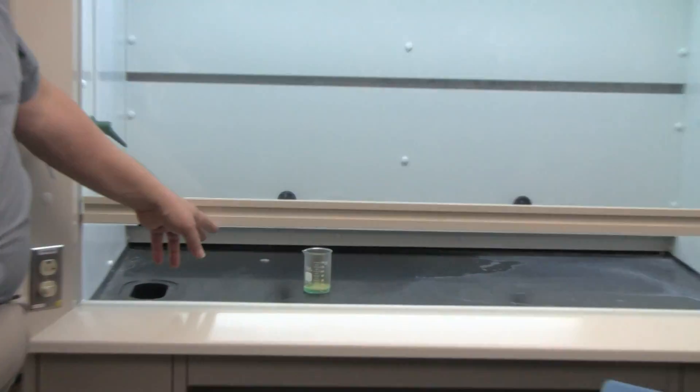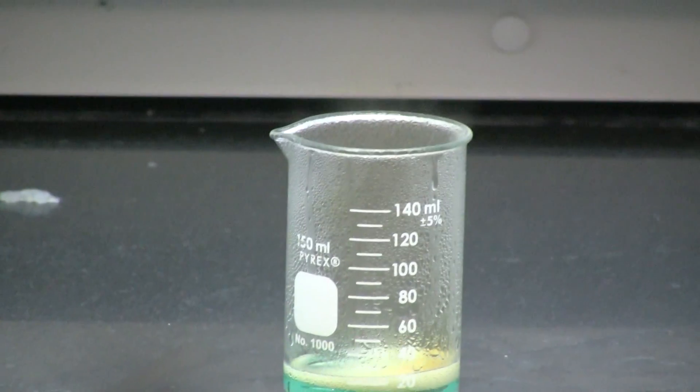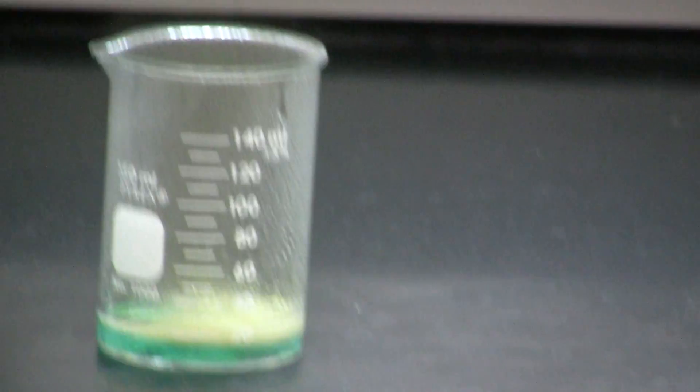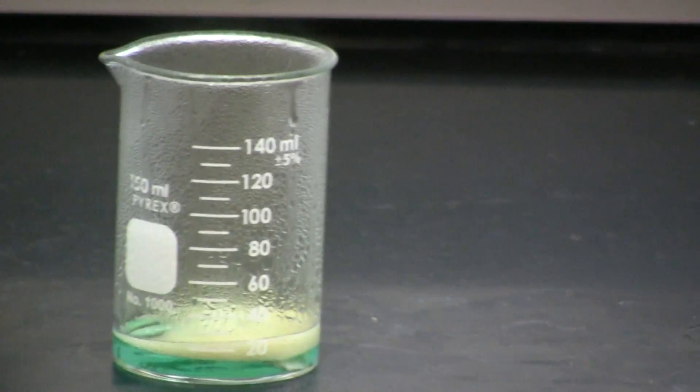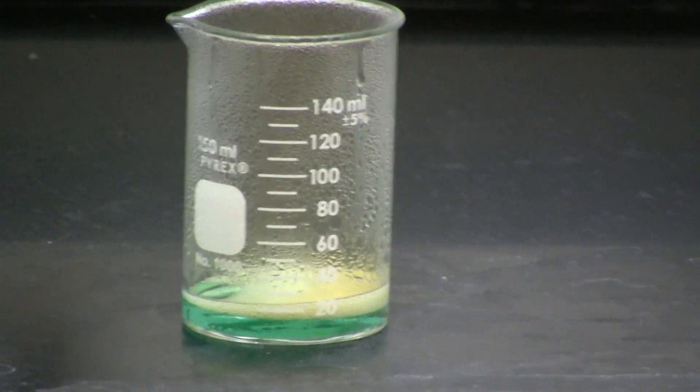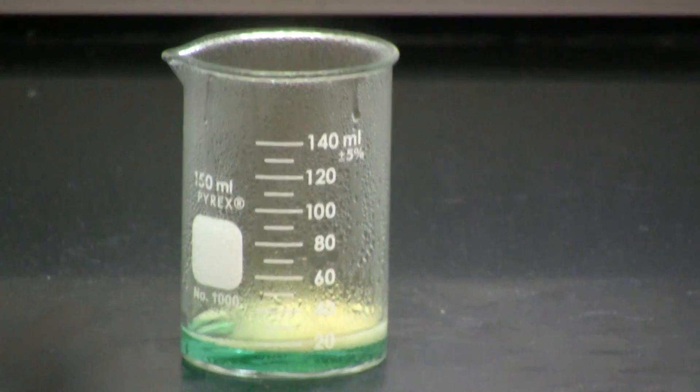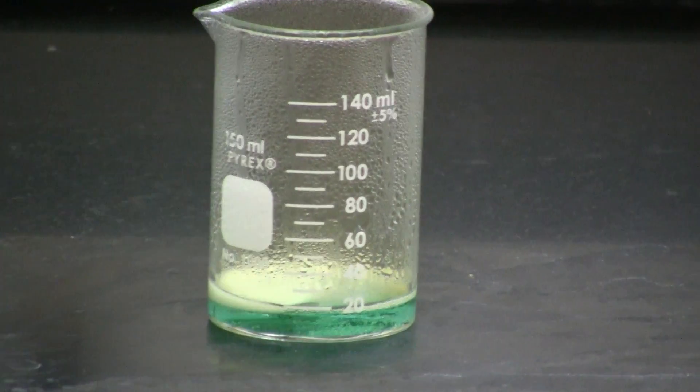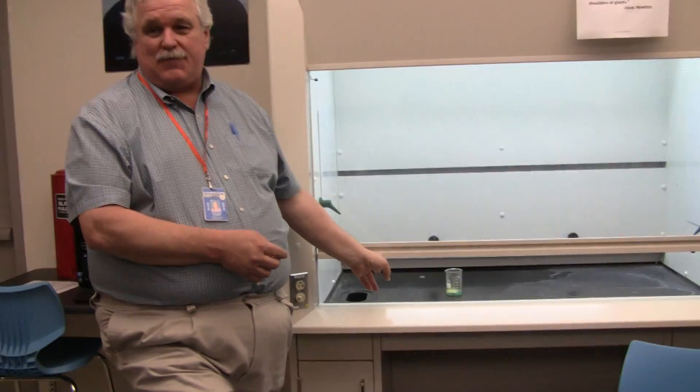The copper has now become an ion, forming a solution of copper nitrate because the nitrate comes from the nitric acid. It's also producing a gas called nitrogen dioxide, the brown gas that you see, and it's also producing water.